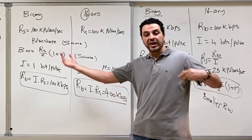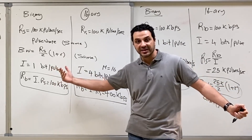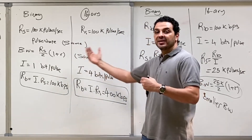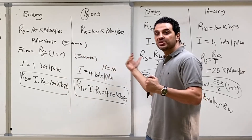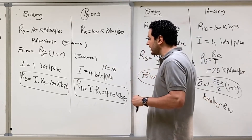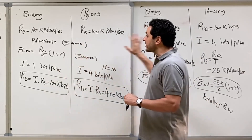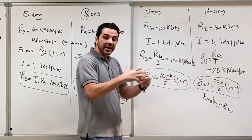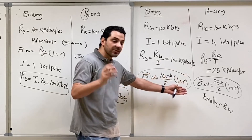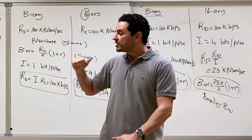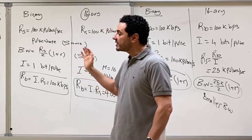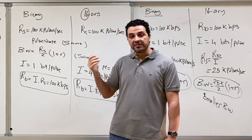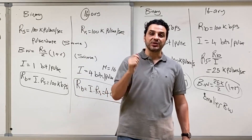So in these two examples, we saw that M-ary can benefit us in two extreme ways: either for the same bandwidth, you can increase the bit rate; or for the same bit rate, you can reduce the bandwidth and save cost. Depending on your application, you can choose one of these extremes or do a mix — reduce the bandwidth a little and increase the bit rate a little. The question is: what is the cost of this? Are we getting these benefits for free? That will be discussed in the next video.